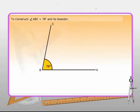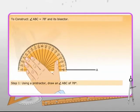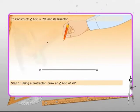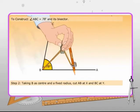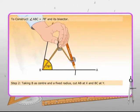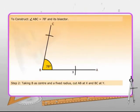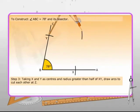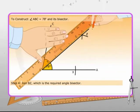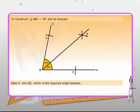Let's look at a problem. Draw an angle of measure 78 degrees and construct its bisector. The construction steps are: First, we draw an angle ABC of 78 degrees by using a protractor. Second, taking B as center and a fixed radius, cut AB at X and BC at Y. Next, taking Y and X as centers and radius greater than half of XY, draw arcs to cut each other at Z. Lastly, join B and Z to get BZ as the required angle bisector.